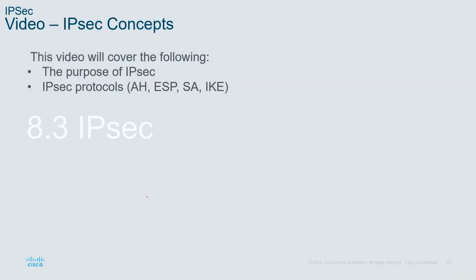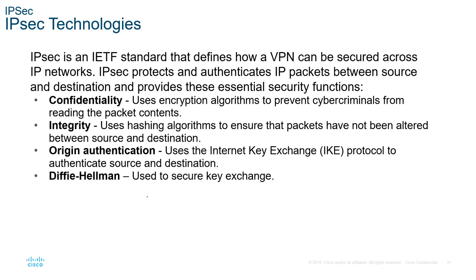Moving on to IPSec: IPSec consists of two main phases — phase one and phase two — and involves protocols like AH, ESP, SA, and IKE. IPSec is an IETF standard defining how a VPN will secure data traffic across the network. There are four main functionalities: confidentiality — encryption; integrity — using hashing algorithms to ensure packets are not altered; authentication — using the IKE protocol, or Internet Key Exchange, to authenticate source and destination; and the ability to use Diffie-Hellman for key exchange.